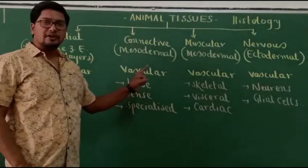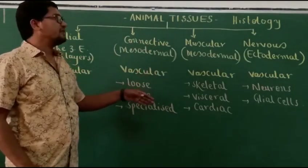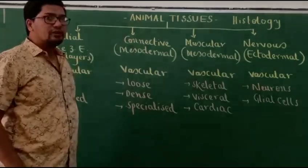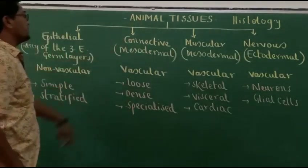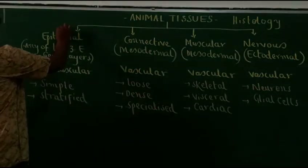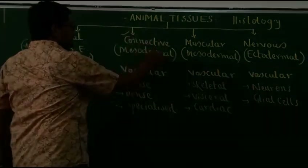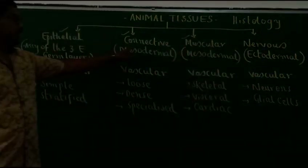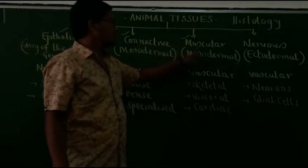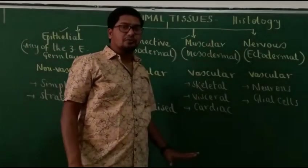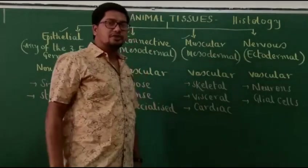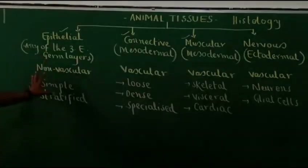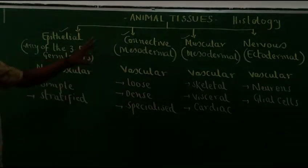Today let us discuss the four important types of tissues present in the body of a vertebrate, or simply the four basic types of tissues present in the body of an animal. These are: epithelial tissues, connective tissues, muscular tissue, and nervous tissue.